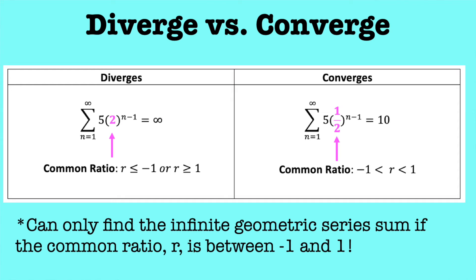And on the right side we have an infinite geometric series that converges to a number, because if you look at the common ratio, it's a half, it's between negative 1 and 1. So it converges to a value and it becomes 10. So how do we know that it becomes 10?